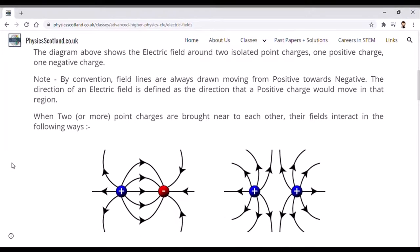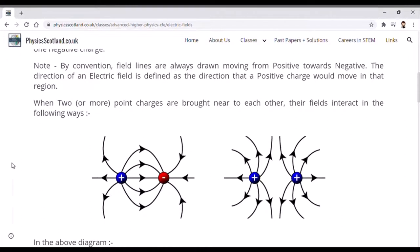However, when we have two or more point charges near to each other, those fields do interact with each other. So we don't get those radial fields anymore, and we get the two following diagrams.